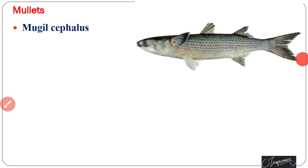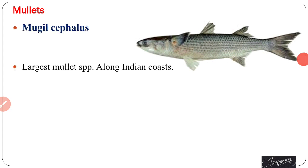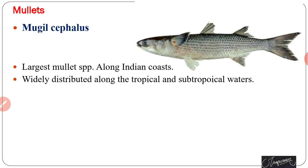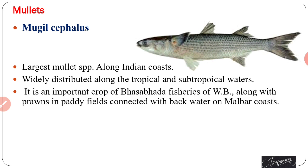Among mullets, Mugil cephalus is one of the most important fish and is the largest mullet species found in brackish water areas along Indian coasts. It is widely distributed along tropical and subtropical waters and is an important crop of Basabhara fisheries of West Bengal.